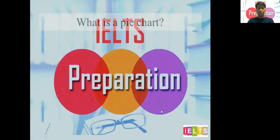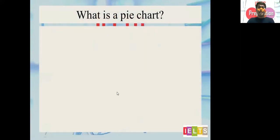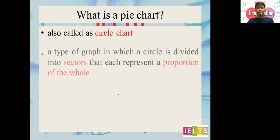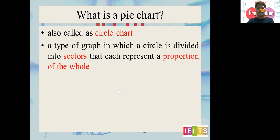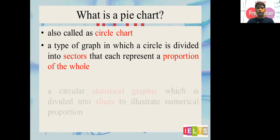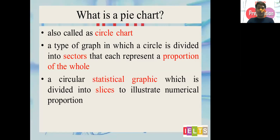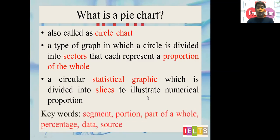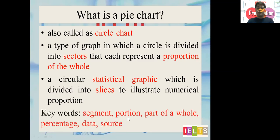We're sure you have seen them already. What is a pie chart? A pie chart is also called a circle chart. It is a type of graph in which a circle is divided into sectors that each represents a proportion of the whole. A circular statistical graphic which is divided into slices to illustrate numerical proportion. So basically, a pie chart is a mathematical object that illustrates numerical proportion. The keywords are: segment, portion, part of a whole, percentage, data, source.